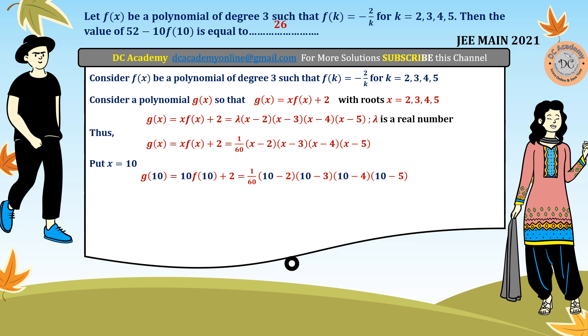Now our job is to calculate that. So therefore, 10f(10) plus 2 is equal to 28, and then 10f(10) is equal to 26. So therefore, 52 minus 10f(10) is equal to 26.